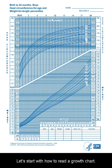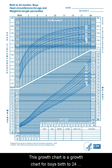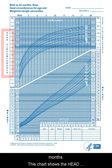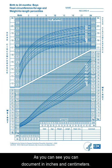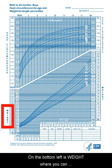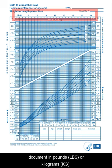Let's start with how to read a growth chart. This growth chart is for boys birth to 24 months. This chart shows the head circumference on the left — you can document in inches and centimeters. On the bottom left is weight,